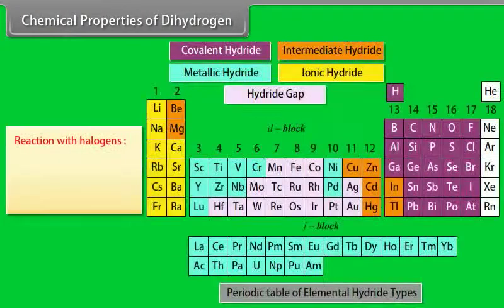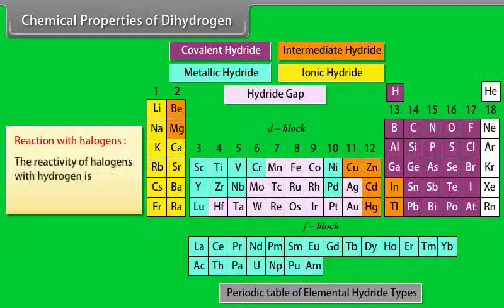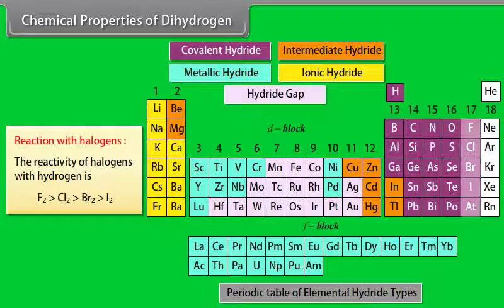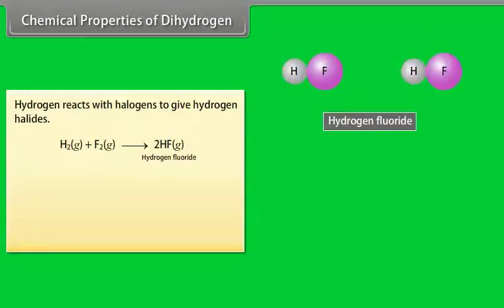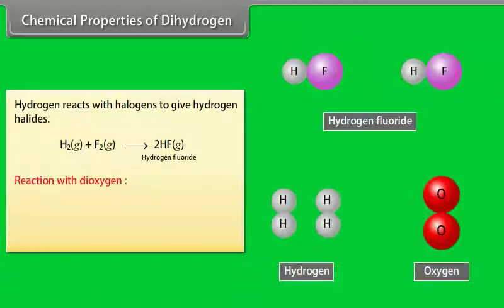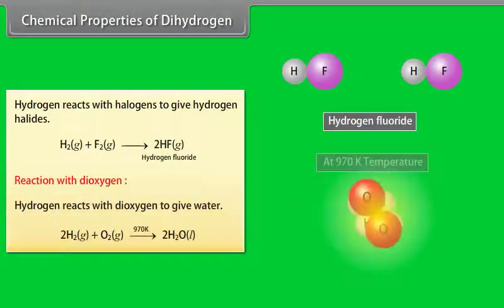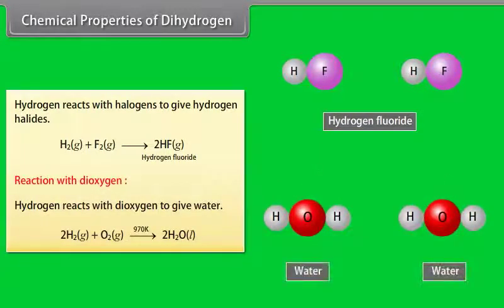Chemical properties of dihydrogen. Reaction with halogens: The reactivity of halogens with hydrogen is fluorine greater than chlorine, greater than bromine, greater than iodine. Hydrogen reacts with halogens to give hydrogen halides. Reaction with dioxygen: Hydrogen reacts with dioxygen to give water.